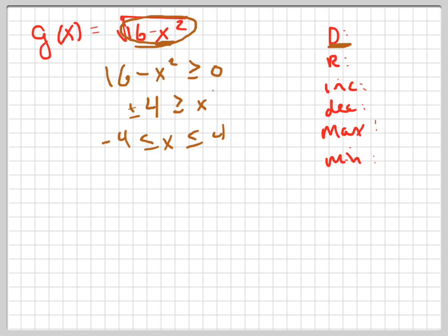Because just think about plugging in numbers there. That's what it's got to be. So including them, by the way, negative 4 comma positive 4. There's your domain.